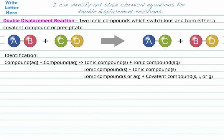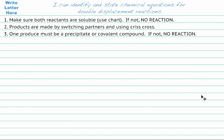Let's try and do some prediction with these types of reactions. There are three steps to this, and we're going to work through a few examples. First, we have to make sure that both reactants are soluble — we're going to use a chart to show that. If they're not both soluble, then there's no reaction.